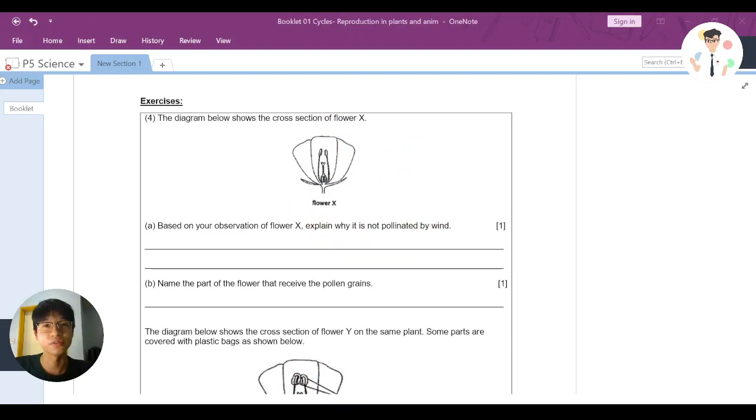Welcome back to the digital class and this is a discussion for our reproduction in plants and animals booklet. Let's look at this question together. This question says that the diagram below shows the cross-section of flower X.